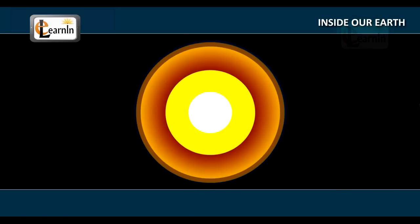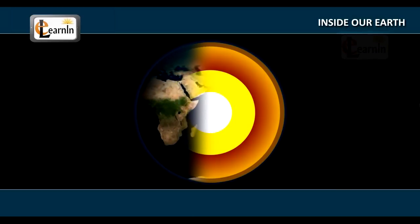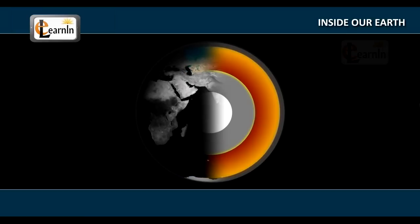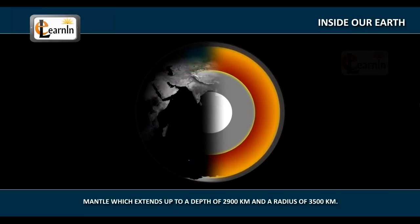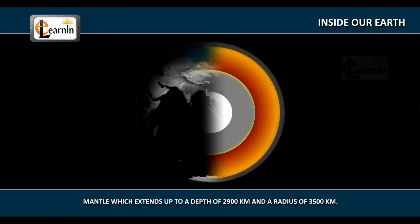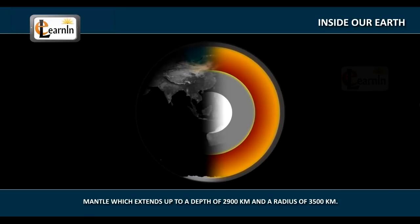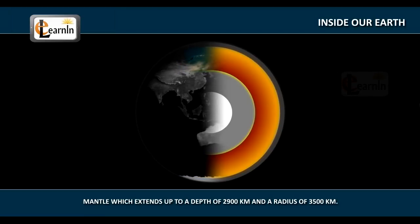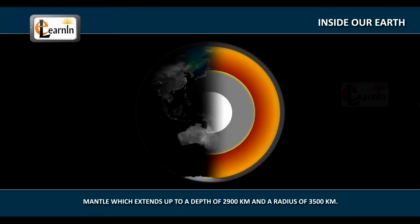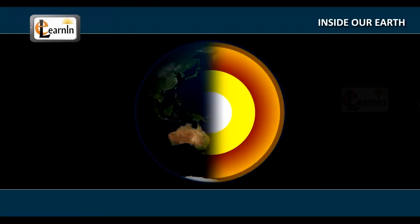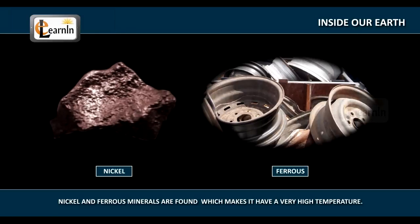Beneath the crust, there is a second layer, the mantle, which extends up to a depth of 2,900 km and a radius of about 3,500 km. The minerals mostly found in this layer are nickel and ferrous, which account for the very high temperatures in the interiors of the Earth.